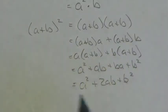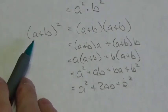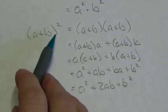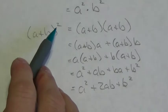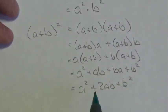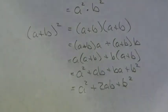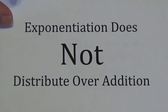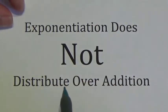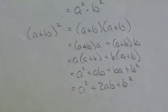So there's my final result. Now wait a minute — look at that. A plus B squared gives us A squared, B squared, plus something else. The reason I want to draw this to your attention is because you need to notice that exponentiation does not distribute over addition. Exponentiation does not distribute over addition.